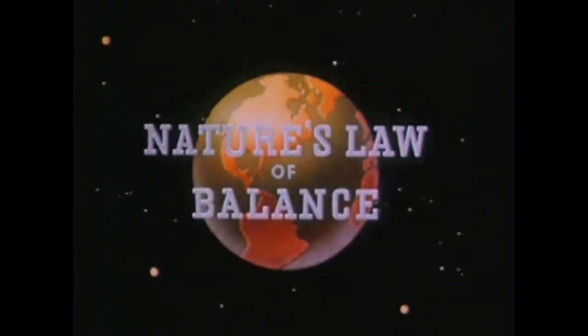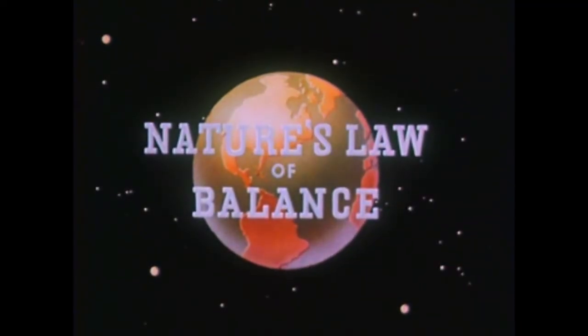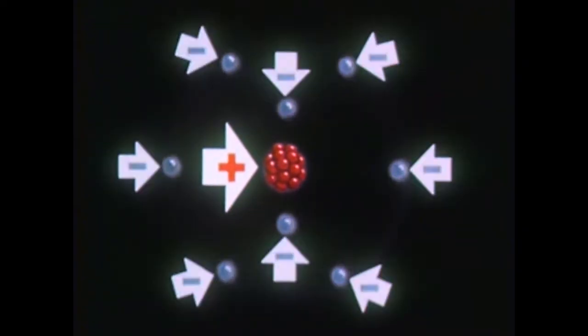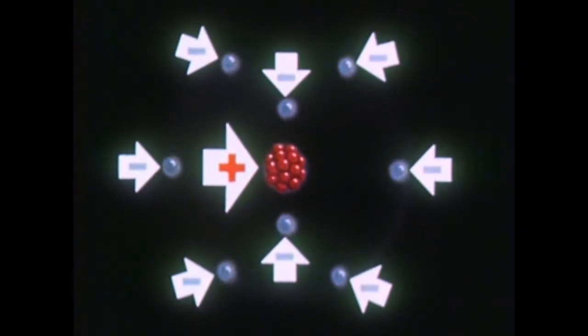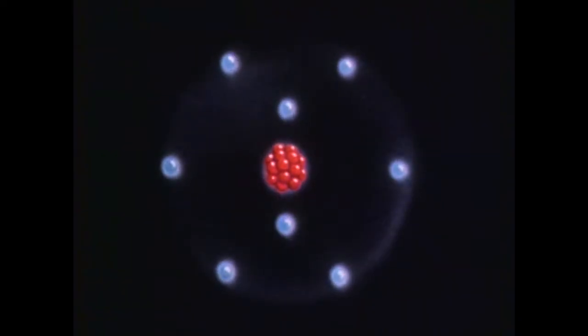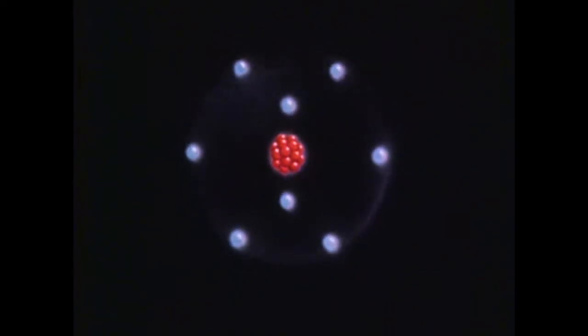Normally, a state of balance is maintained within the atom by a positive charge in the nucleus equal to the total negative charge of the electrons. And when the atom contains its normal number of electrons, it is said to be in electrical balance, to be in a neutral electrical condition.